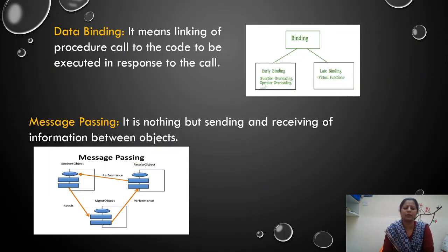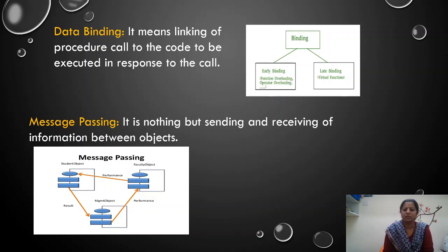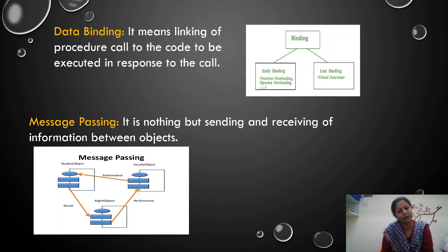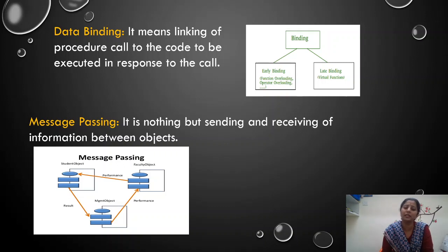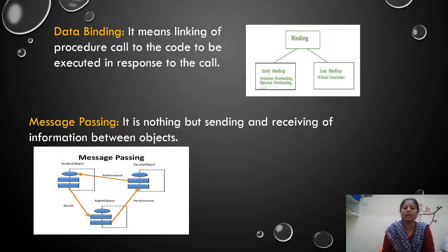Then we come to the last concept — that is dynamic binding. Linking the procedure calls to the executable code. There are two types: one is compile time, another is dynamic time or execution time. Compile time example is your inline function — during compilation, the function call invokes control and replaces the function statement in the function call itself; that is done by your compiler. Hence it is called compile time binding. For dynamic binding, when you execute instructions like square root, the square root implementation present in math.h is linked during execution time. Such binding is called dynamic binding or execution time binding.